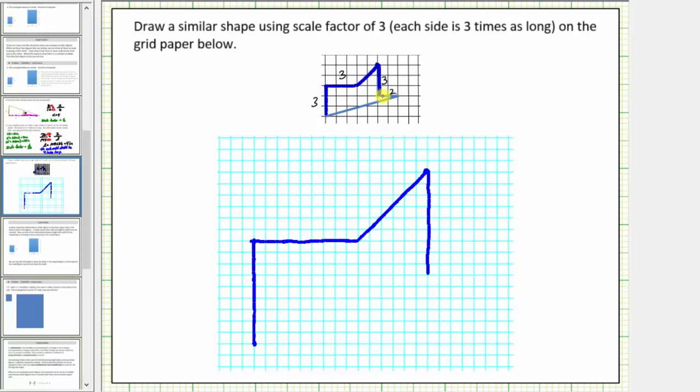The next segment goes right two units. So we'll go right two times three or six units. So three, six. This side corresponds to this side.